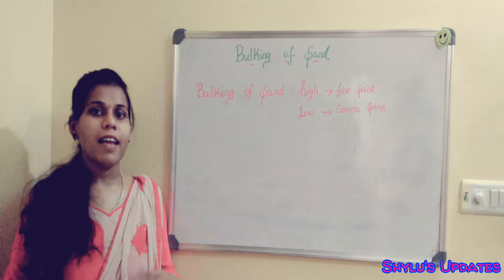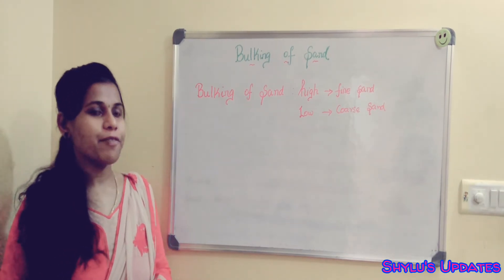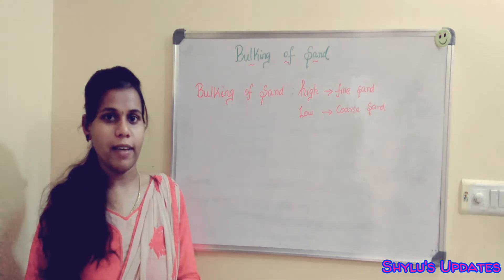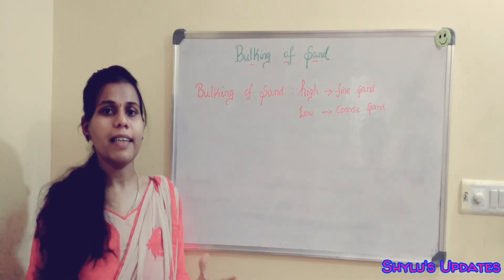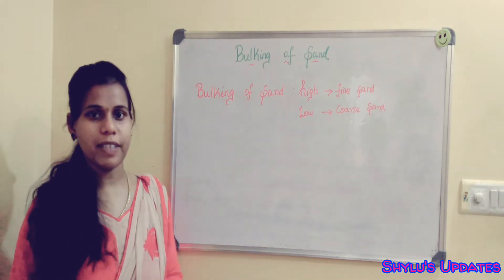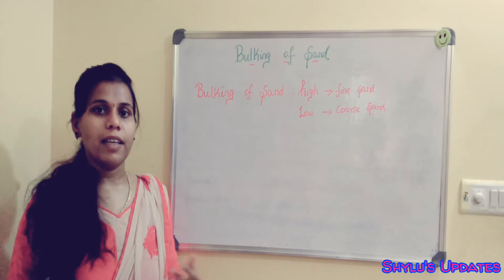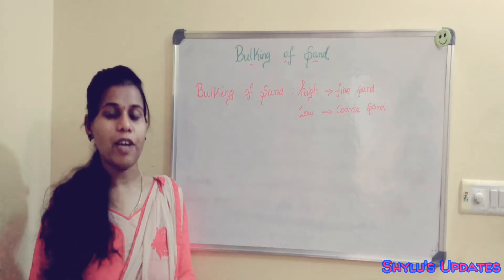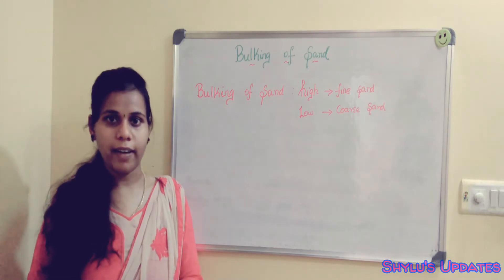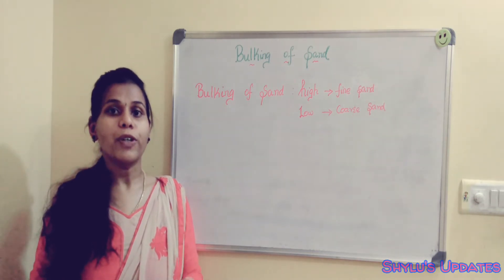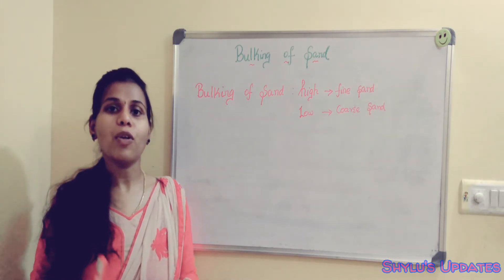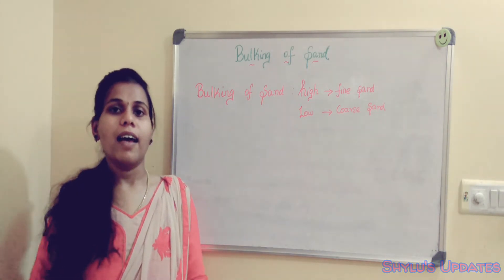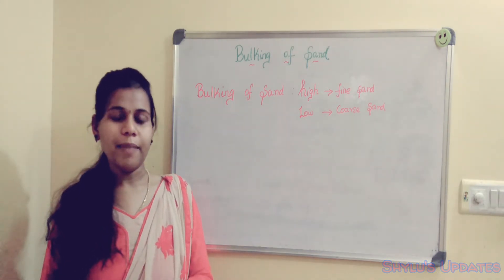Consider a jar full of sand — if you add an excess of water, then bulking of sand will happen. As mentioned, bulking of sand is high for fine sand and low for coarse sand. What is the demerit of this bulking of sand? If bulking of sand occurs, there will be increasing cost of concrete and mortar, and also poor workability — when we mix the concrete, it won't get mixed properly.